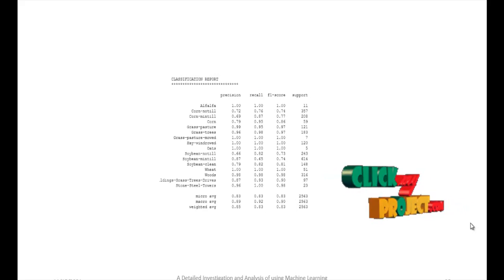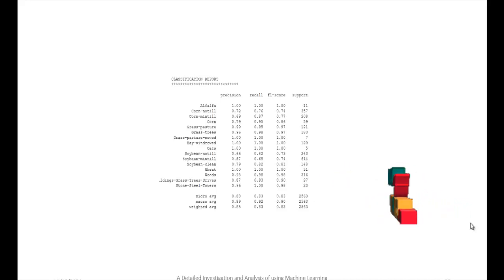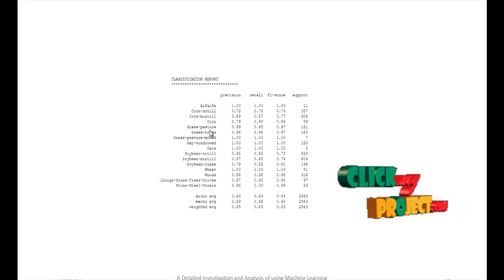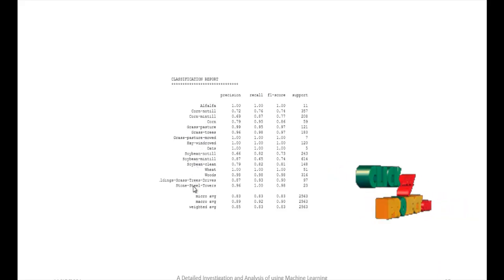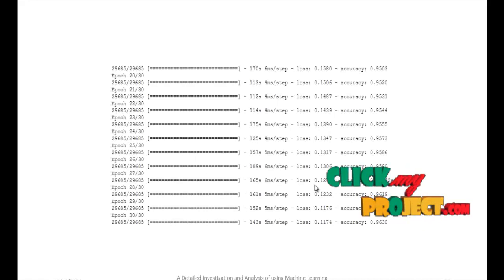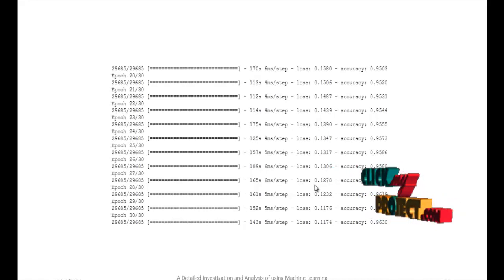This is the hyperspectral image output and the prediction output. After that is the classification report showing precision, recall, F1 score, and support for each class including grass, crop, and other land cover categories calculated from the satellite images. This is also the confusion matrix output. Using CNN for predictions, the loss is 0.1174 and the accuracy is 0.9630.